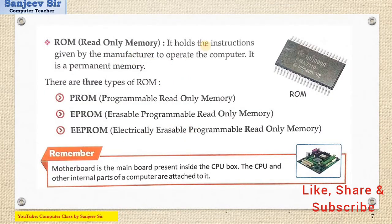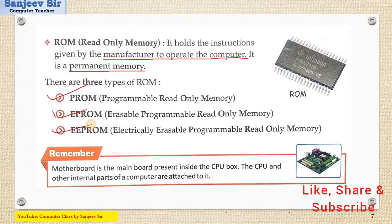ROM is different from RAM. ROM holds information given by the manufacturer to operate the computer. When we start the computer, we get a black and white screen with some messages showing which devices are connected — all these things are already available in ROM as permanent memory. The full forms are PROM, EPROM, and EEPROM (Electrically Erasable Programmable Read-Only Memory). In the motherboard, all the slots are given for RAM. ROM is permanently attached but RAM can be added and the hard disk can also be added.